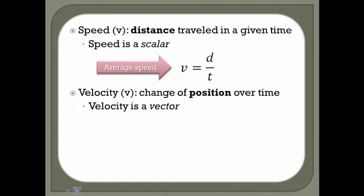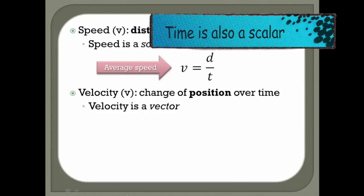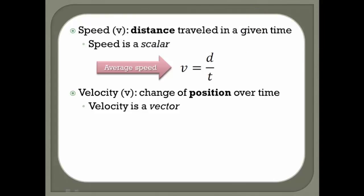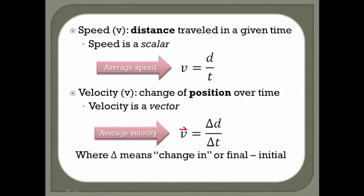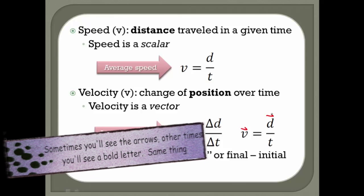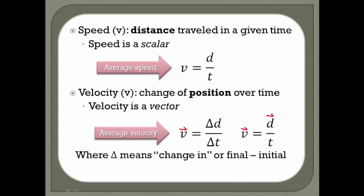Velocity, on the other hand, is the change of position over time. When we talked about vectors, displacement dealt with some origin point and the resultant displacement from that point. Velocity, like displacement, is a vector. You'll see it written with an arrow over top: v equals delta d over delta t, or displacement over time. Delta is a Greek letter meaning 'change in' or final minus initial. Delta d equals distance final minus distance initial, and that's what we're looking for.